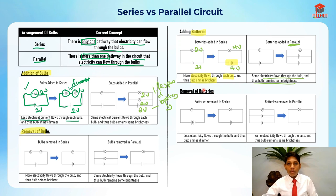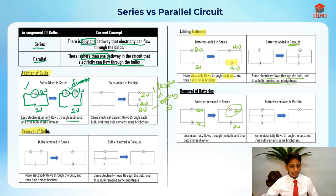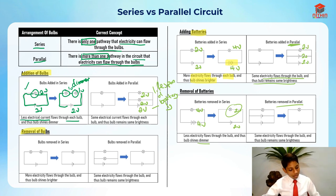When batteries are removed in series, less electric current flows through the bulb and it shines dimmer — from four volts down to two volts. For batteries removed in parallel, there's basically no difference because the light bulb still receives two volts either way. So the brightness remains the same.